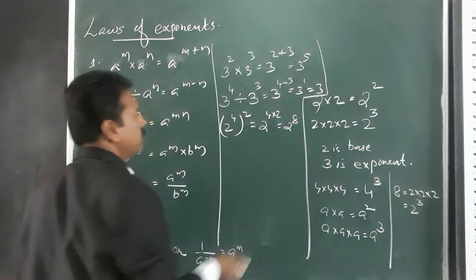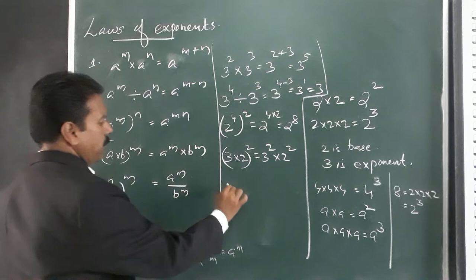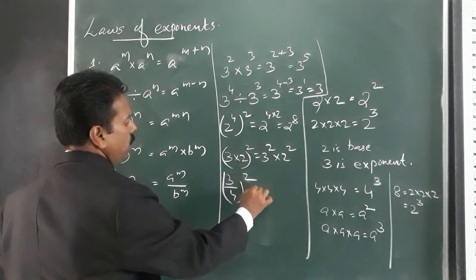Next example: 3 into 2, the whole raised to 2, equals 3 raised to 2 into 2 raised to 2. And 3 by 4 the whole raised to 2 equals 3 squared divided by 4 squared — applying the power of a product and power of a quotient rules.